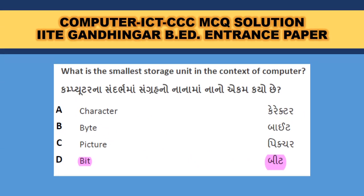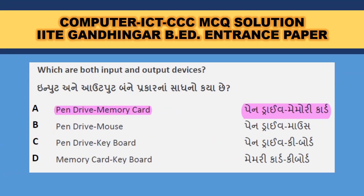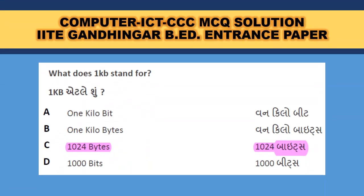What is the smallest storage unit in the context of a computer? Bit. Bit is the smallest unit, then comes byte. Byte makes a character and then a word. Which are both input and output devices? Pen drive and memory card — they can both input data and take output of data. Pen drive and mouse — mouse is only an input device. Keyboard is also only an input device, so B, C, and D are not the correct combination.